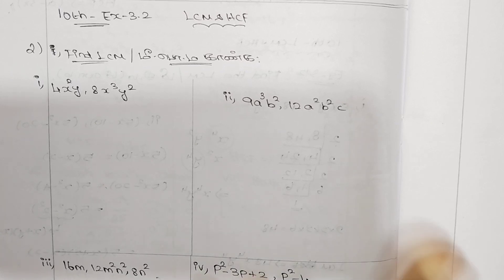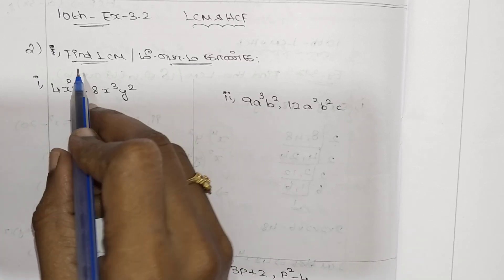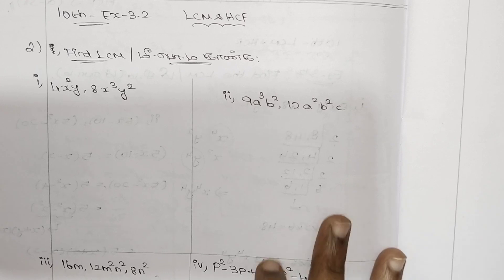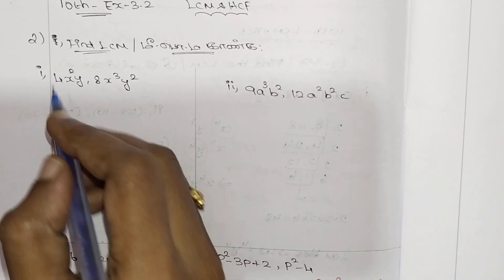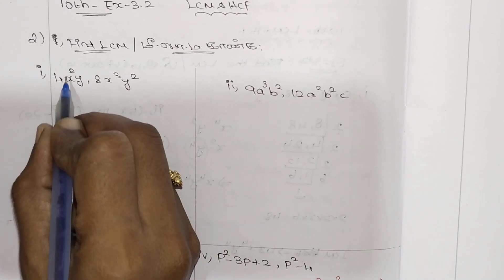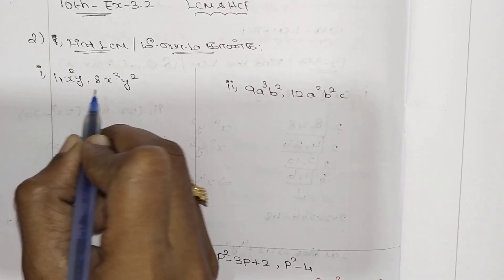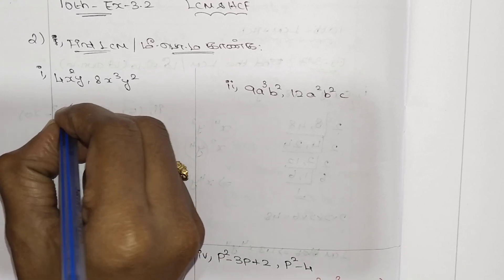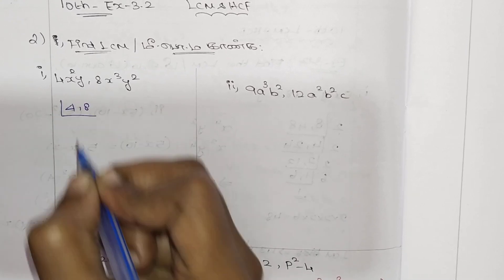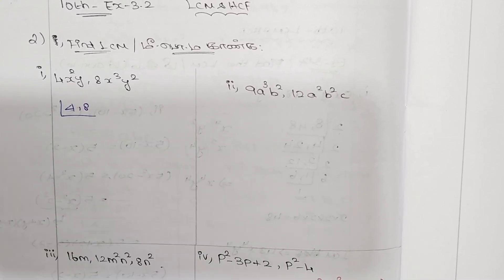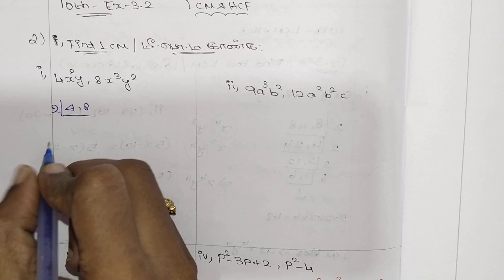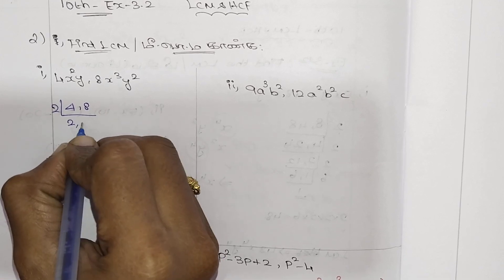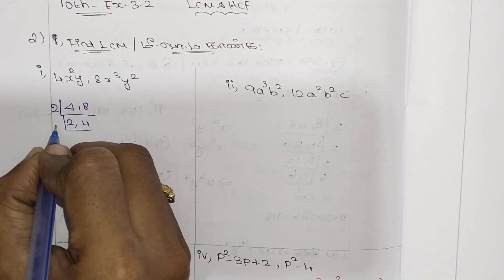First, we have our subdivision. Find the LCM — that is the most important thing. First, what is 4x²y and 8x³y²? So let's see the numbers here. We can see the numbers: 2x²-4 and 4x²-8.